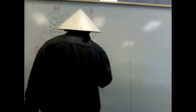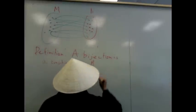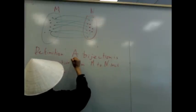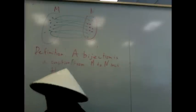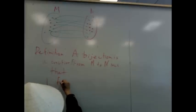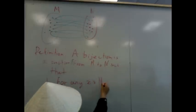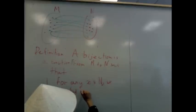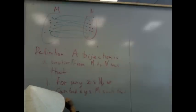A bijection is a function from the two universes. By the way, they can be the same universes. Such that, we're going to call a function, we're going to call a function M. Such that two things happen. One.